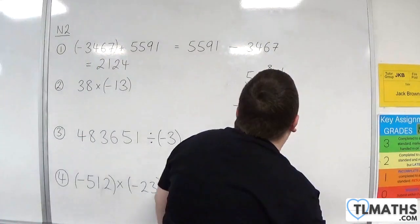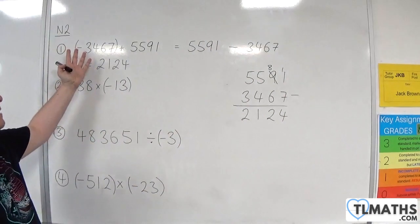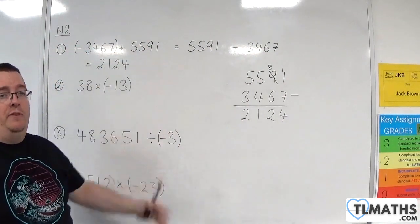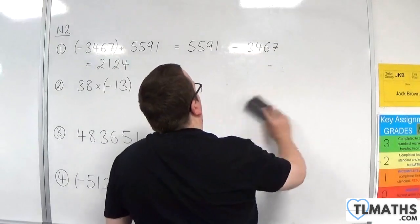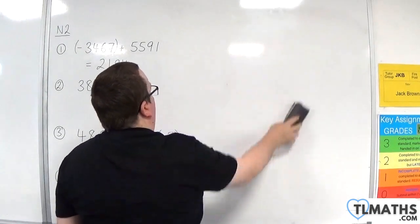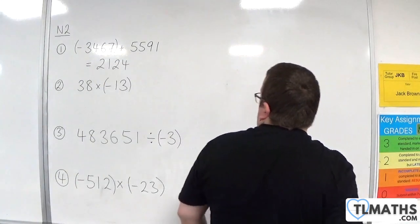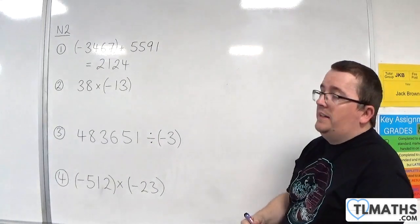So that's how we can deal with a negative number added to a positive number. Number 2, 38 times negative 13.